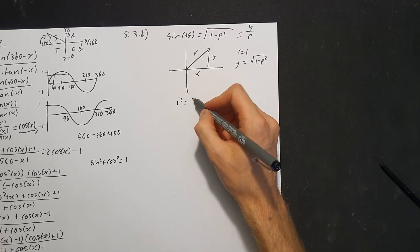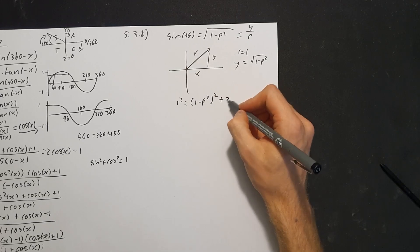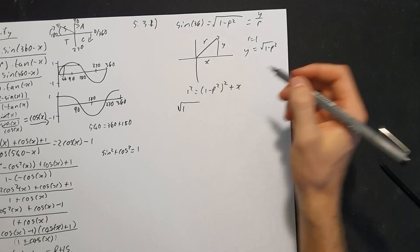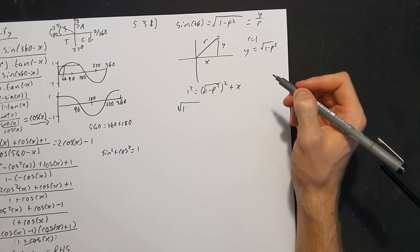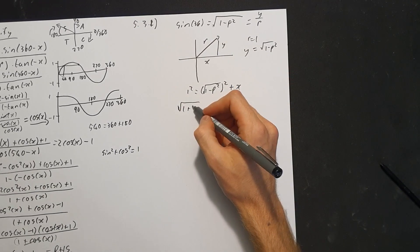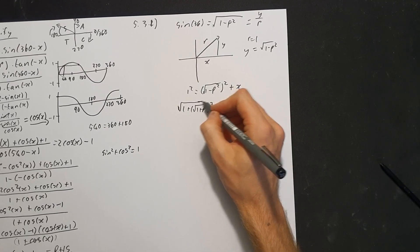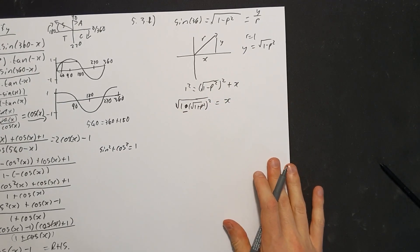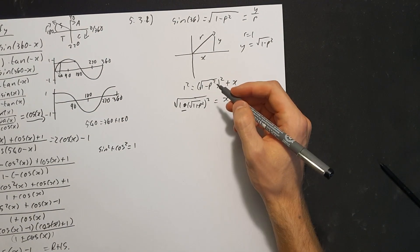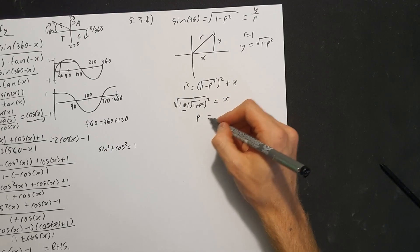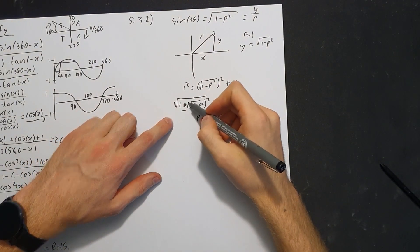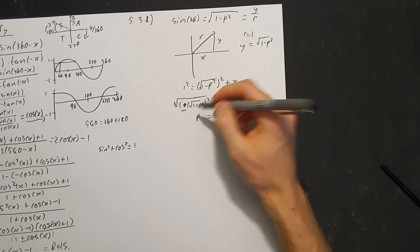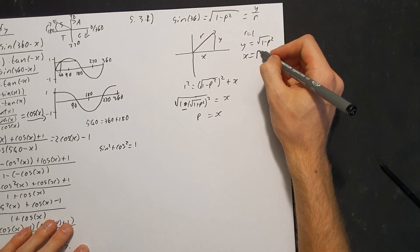To find x, we use the Pythagorean theorem: 1 squared equals (√(1 minus p squared)) squared plus x squared. Simplifying: 1 equals (1 minus p squared) plus x squared, so x squared equals p squared, and therefore x equals p.